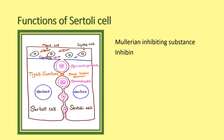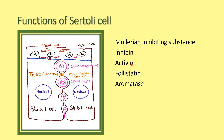Inhibin inhibits the production of FSH, while activin stimulates the production of FSH. Follistatin also inhibits FSH. Aromatase is also produced from the Sertoli cell; aromatase converts androgen to estrogen. These are the endocrine functions of Sertoli cells: Müllerian inhibiting substance, inhibin, activin, follistatin, and aromatase.